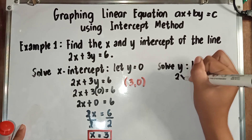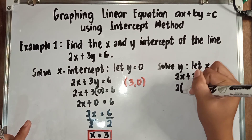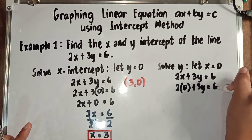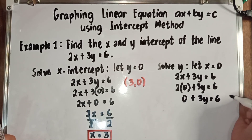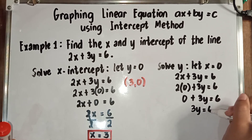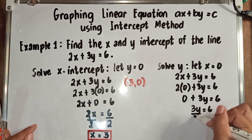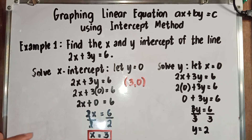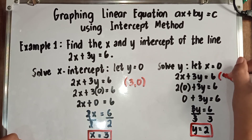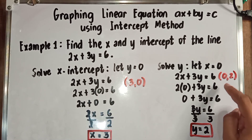Copy the equation: 2X plus 3Y is equal to 6. Then we will let X equal to 0, so we have 2 times 0 plus 3Y is equal to 6. 2 times 0 gives us 0 plus 3Y is equal to 6. Bring down 3Y is equal to 6. We need Y alone, so we divide both sides by 3. Y is equal to 6 divided by 3, which is 2. Our Y is equal to 2, so our second ordered pair is X is 0 and Y is 2. The two ordered pairs are (3, 0) and (0, 2).